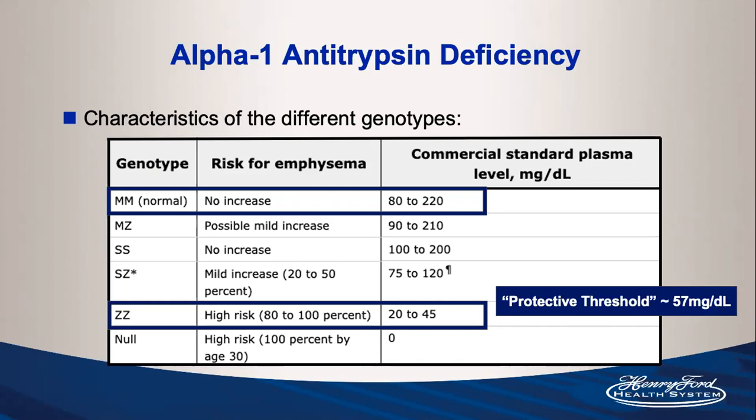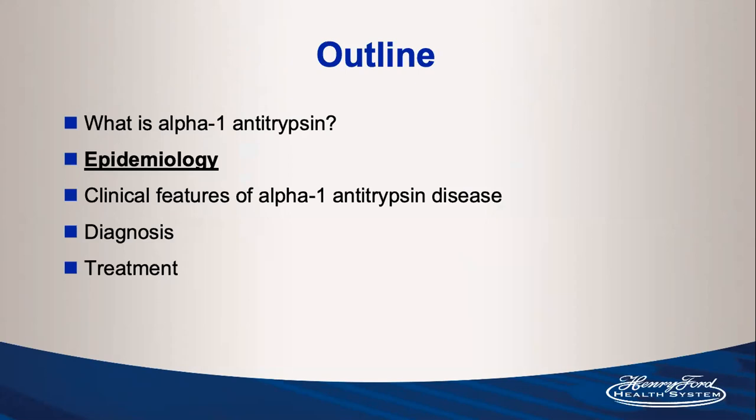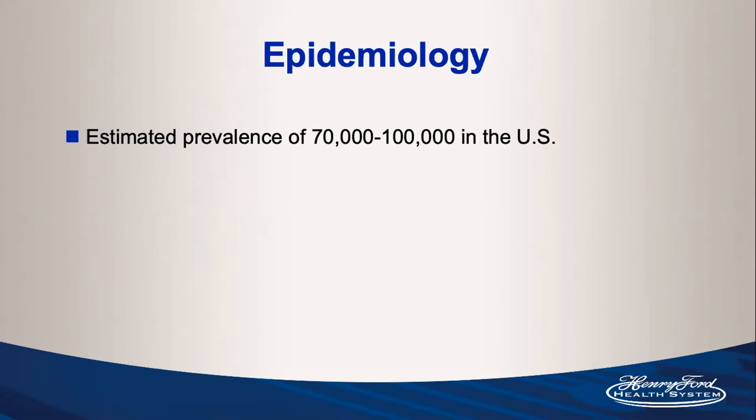Moving to the epidemiology, I want you to gather that this disease is far more common than we give it credit for. The estimated prevalence in the United States is around 70,000 to 100,000.